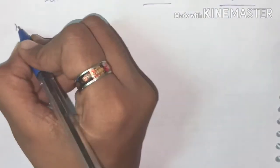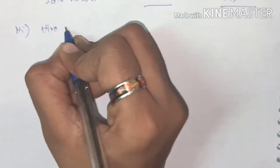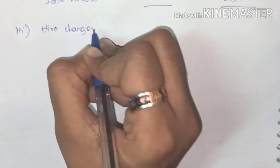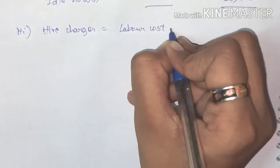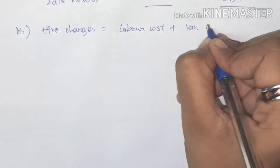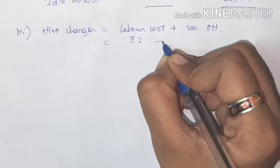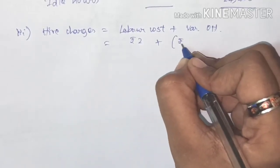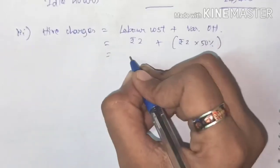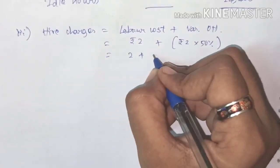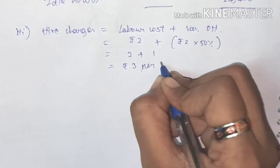For the third part, minimum hire charges if the company subcontracts the surplus labor hours in department 2: hire charges = labor cost + variable overhead = Rs 2 + 50% of Rs 2 = Rs 2 + Re 1 = Rs 3 per hour.